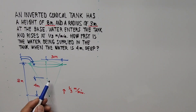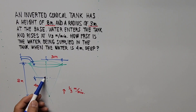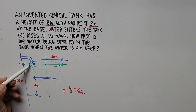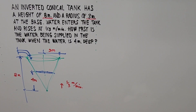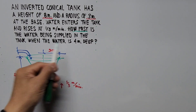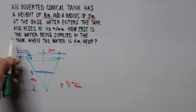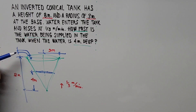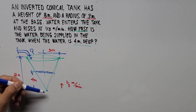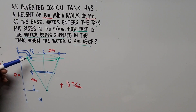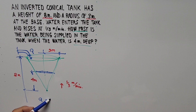Assuming you have the level of the water inside the conical tank at this level — how fast is the water being supplied when the water is 4 meters deep? It means the volume of water being supplied in the tank. We signify the volume of water being supplied as Q. Once it gets in the tank, it adapts to the volume of the inverted conical tank, so Q equals the volume of the conical tank.